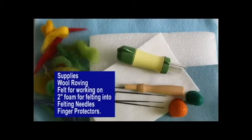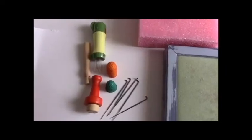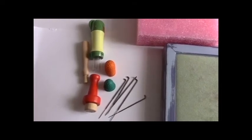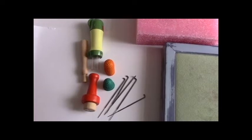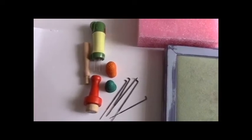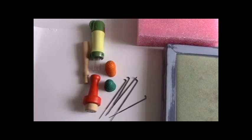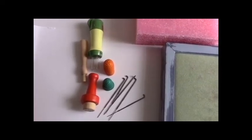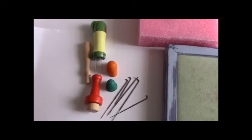The supplies you will need will be wool roving, some felt for working on, white or blue, a two inch foam for felting. So that could be two inch upholstery dense foam. This prevents the needle from going into the surface underneath like your table. Alternatively you can use two inch packing foam. Felting needles and finger protectors.